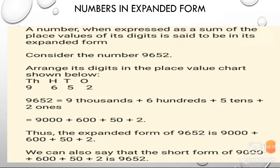Now, moving towards our next topic: numbers in expanded form. A number, when expressed as a sum of the place values of its digits, is said to be in its expanded form. Consider the number 9,652. Arrange them in the form of a place value chart. 9,652 equals 9,000 plus 600 plus 50 plus 2 ones.